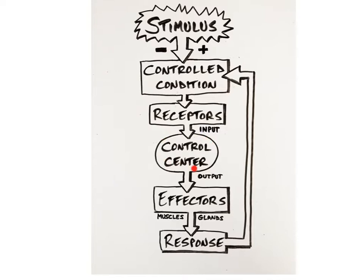The control center determines the particular set point for the controlled condition, which is the range of values in which the condition is to be regulated. It evaluates the input received from the receptors and generates corresponding outputs in the form of nerve impulses or hormones needed to restore the condition back to its normal range. The most common control center in the body is the brain. An effector is the third basic component of a feedback system, and it receives the output sent from the control center. Just about any of the body's tissues and organs can act as effectors, but they are frequently muscles or glands. The effector generates a specific response that can bring the controlled condition back to its original set point.